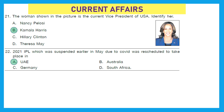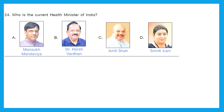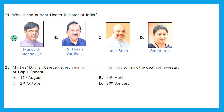The right answer is option A — UAE. Question 23: Which of the following was the venue of the Summer Olympics 2020? The right answer is option A — Japan. Question 24: Who is the current health minister of India? Is it Mansukh Mandaviya, Harsh Vardhan, Amit Shah, or Smriti Irani? Referring to 2021, the right answer is option A — Mansukh Mandaviya. Question 25: Martyrs' Day is observed every year on what date in India, to mark the death anniversary of Mahatma Gandhi? The right answer is option D — 30 January.